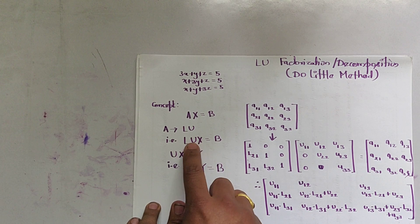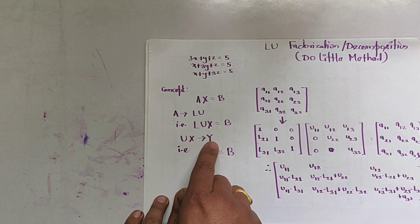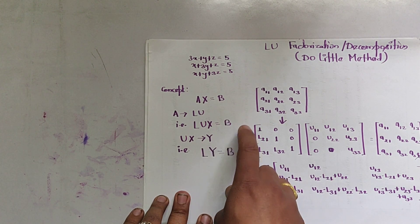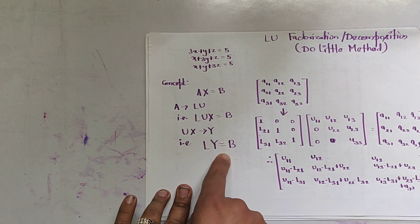It becomes LUX = B. We suppose UX = Y where Y is Y1, Y2 and Y3 if there are three variables, and that becomes LY = B.